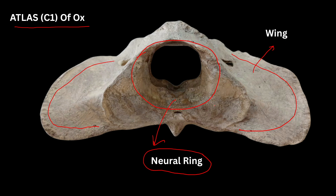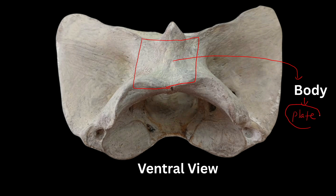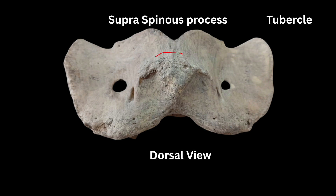Now looking at the body of the atlas — this is the ventral view. The body is in the form of a plate-like structure. In other vertebrae, the body is in the form of a solid cylindrical rod-like structure, but in the case of the atlas the body is like a plate.